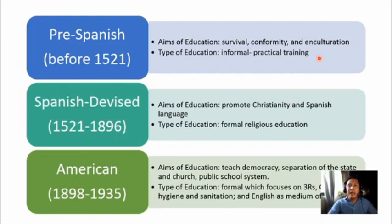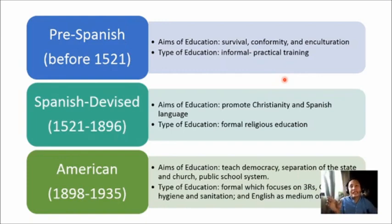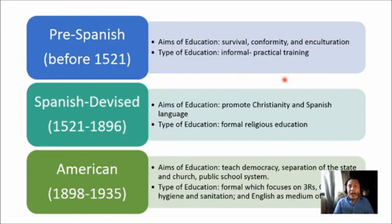Filipinos followed the Code of Kalantiaw and Maragtas, believed in Bathala and other deities, and practiced obedience and respect for elders — a hallmark of Filipino values. The medium of instruction was Alibata or Baybayin, conducted by the babaylan, or tribal tutors. So aside from parents, they had tribal tutors called babaylan. Before 1521, Filipinos already had education, though informal and primarily for survival, with the writing system called Alibata or Baybayin.